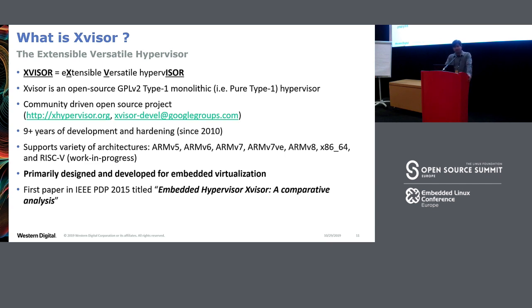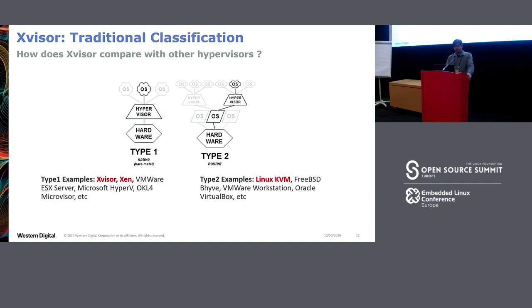X-Visor is primarily designed for embedded virtualization — not targeted at servers with many CPUs or huge amounts of RAM. The goal is to provide good virtualization performance in resource-constrained embedded systems. Our first peer-reviewed paper was in 2015, where we did an apple-to-apple comparison between KVM, Xen, and X-Visor on the same board, showing better performance on microbenchmarks.